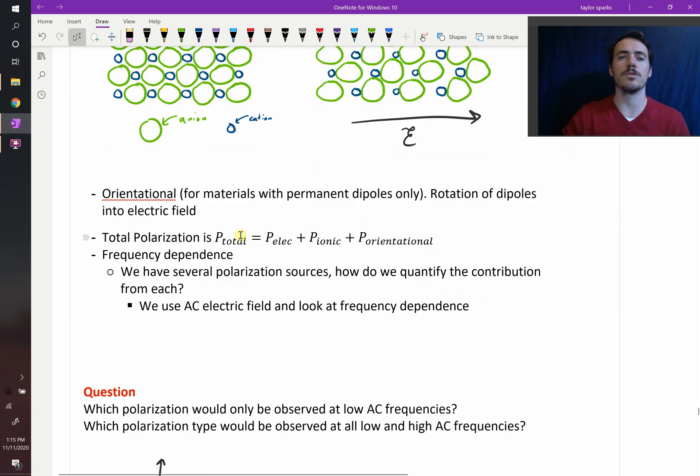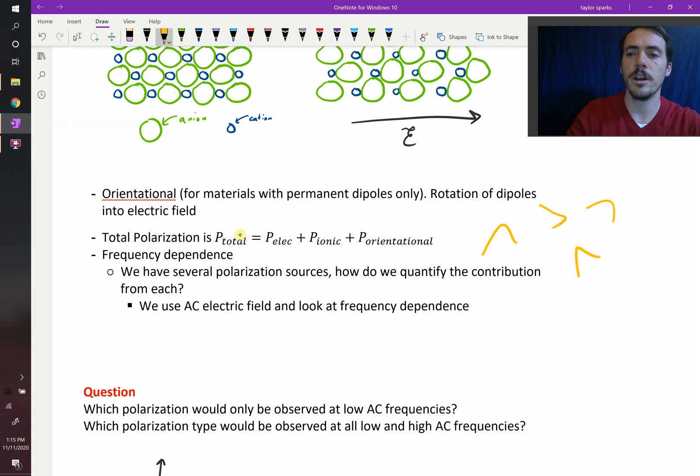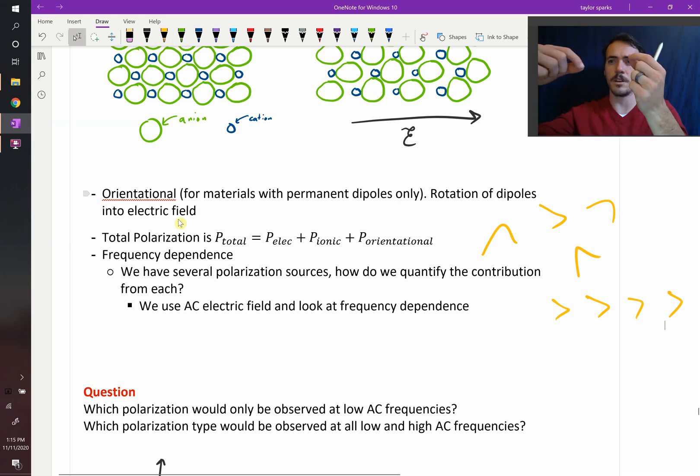You can get orientational, again, if they're a bunch of randomly oriented molecules of water, and then you apply an electric field, then all these things are going to line up in the electric field. So that would be orientational, where these things literally orient themselves with respect to the electric field. This requires that your material has a permanent dipole.